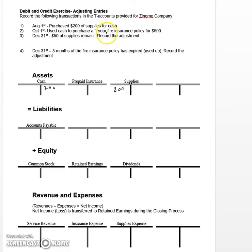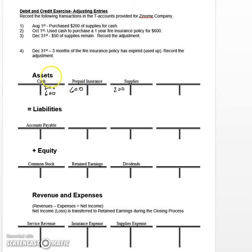The second transaction: on October 1st the company used cash to purchase a one-year fire insurance policy for six hundred dollars. We credit cash six hundred dollars. The debit side goes to another asset called prepaid insurance, increasing it by that same six hundred dollars. We increase prepaid insurance because on October 1st it meets the definition of an asset — it represents an economic resource with a future benefit, as we'll benefit from this insurance over the upcoming year.